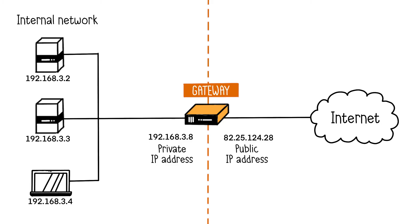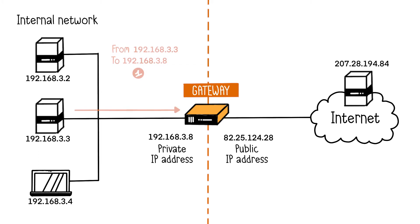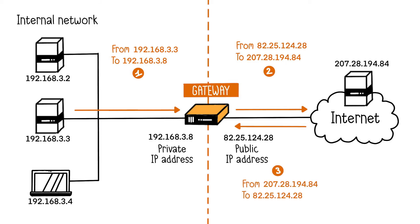Every machine in the internal network is configured to route external communications through the gateway. When an internal machine initiates a request to the Internet, the gateway handles the request, receives the response, and forwards it back to the originating machine. Employing a gateway adds an additional layer of security as it conceals the internal network addressing.